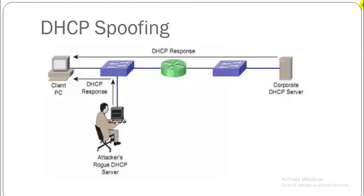ARP spoofing allows the attacker to intercept traffic on the LAN, modify the traffic, stop the traffic, or simply sniff all the traffic and do whatever he wants. This is possible because all communication in the LAN is now crossing the attacker's interface, making it vulnerable to packet sniffing as well.